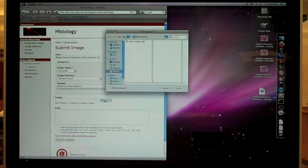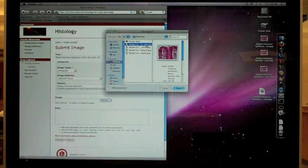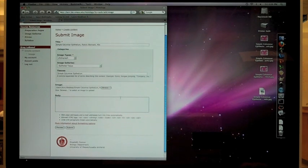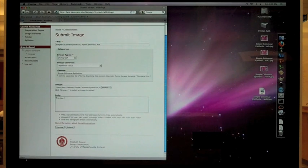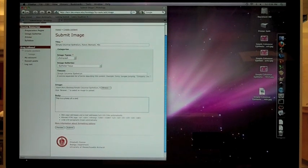Use Browse to find and upload your image. Describe important information like tissue type and magnification in the body field. Don't forget to define your labels.